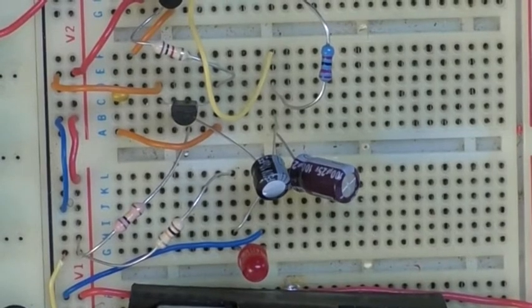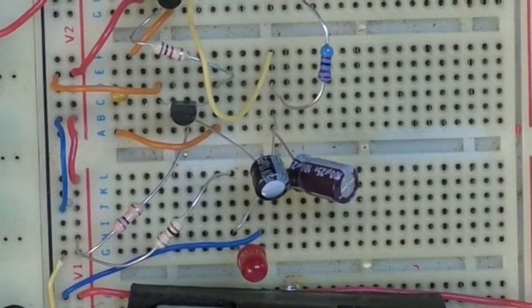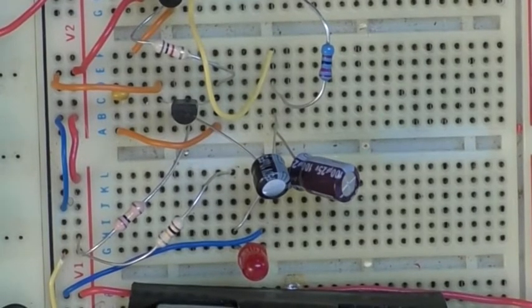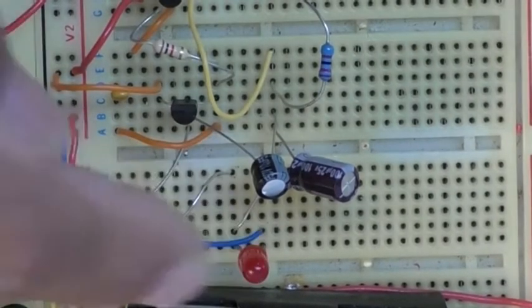So this is the circuit working with the two transistors BC547 and BC557, and it's flashing nicely as you can see.